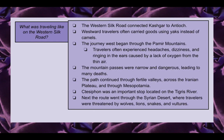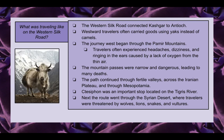What was traveling like on the western Silk Road? The western Silk Road connected Kashgar to Antioch, a port on the Mediterranean Sea. Westward travelers often carried goods using yaks instead of camels, as yaks were more suited for the mountainous regions. The journey west began through the Pamir Mountains, where travelers often experienced headaches, dizziness, and ringing in the ears caused by a lack of oxygen from the thin air.